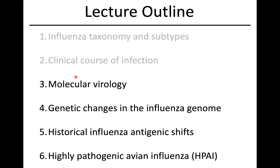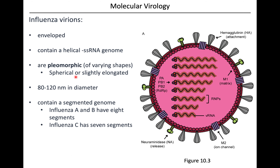Let's talk about some of the molecular biology - basically how the influenza virus does its thing. We already talked about the HA and NA glycoproteins on the surface. This is an enveloped virus, so those glycoproteins are protruding from the viral envelope. We've got the single-stranded, segmented genome. The virion itself is pleomorphic - meaning it can vary its shape - typically either spherical or slightly elongated. Influenza A and B have eight genome segments, and C has seven.